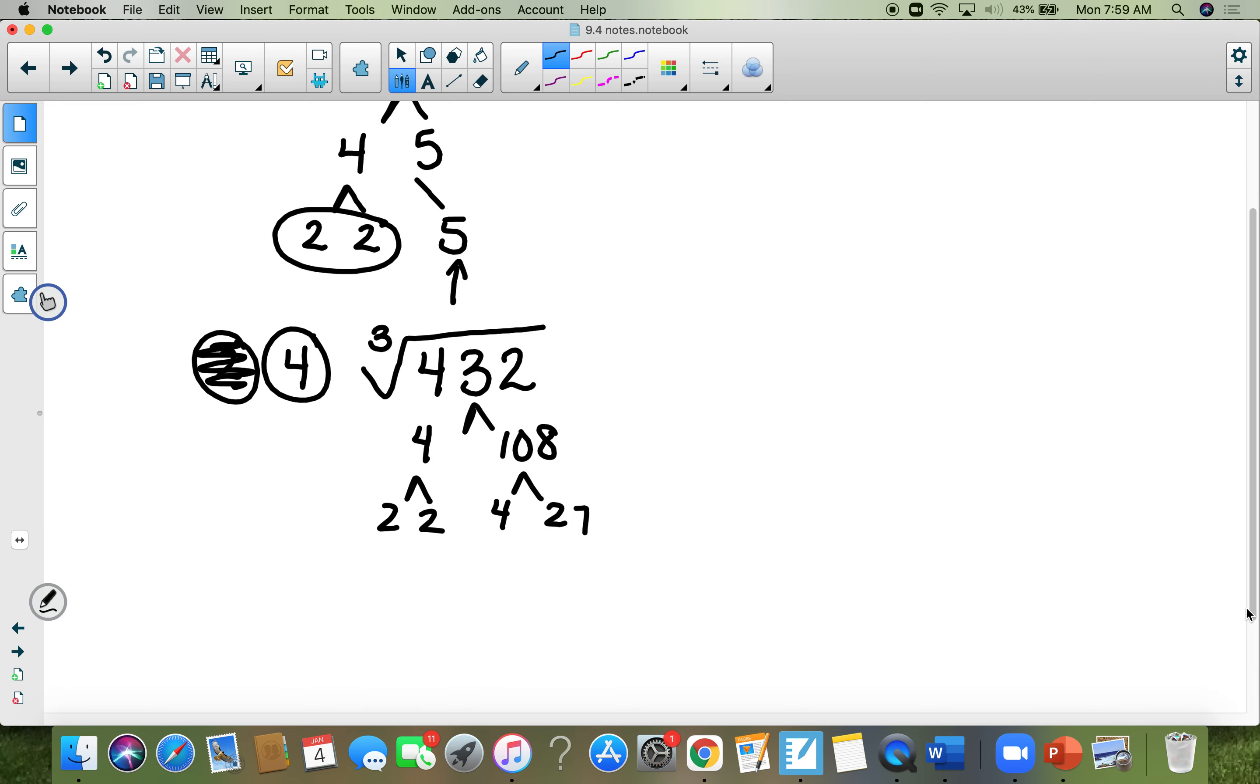If I'm going a little too fast, you can always pause this. So bring down your 2, bring down your 2. 4 is 2 and 2. And I'm just going to hurry this up. 27 is 3, 3, and 3. 3 times 3 times 3 is 27.